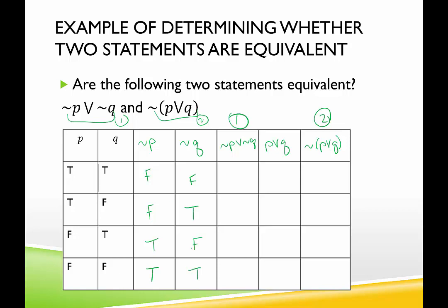Not P or not Q: for an or to be true, one or the other must be true, or they can both be true. False or false gives us a false disjunction. False or true is true. True or false is true. True or true is true. Statement 1 is done.